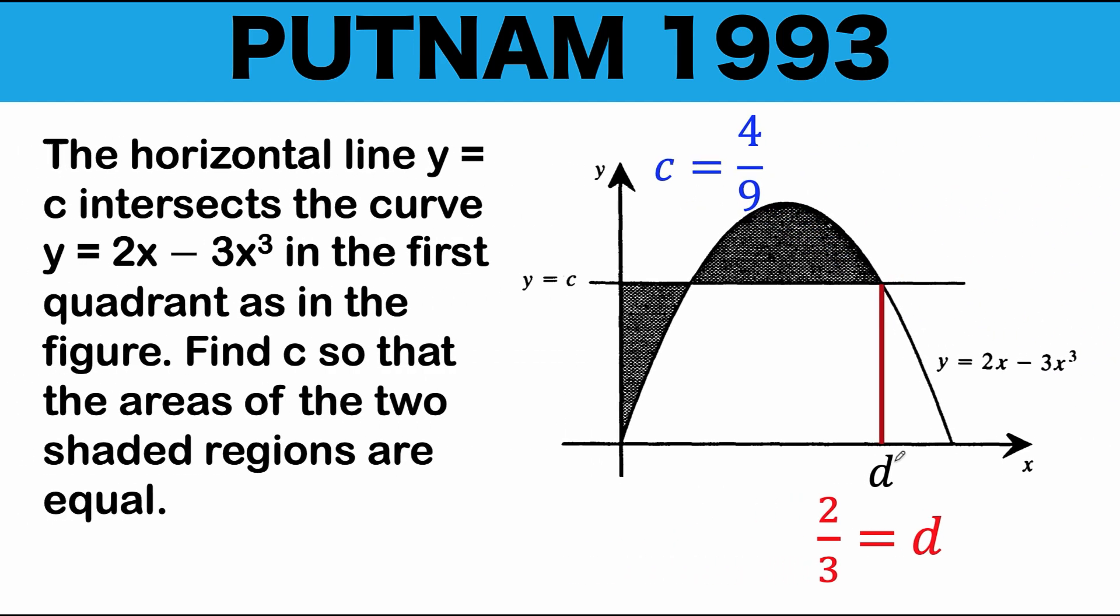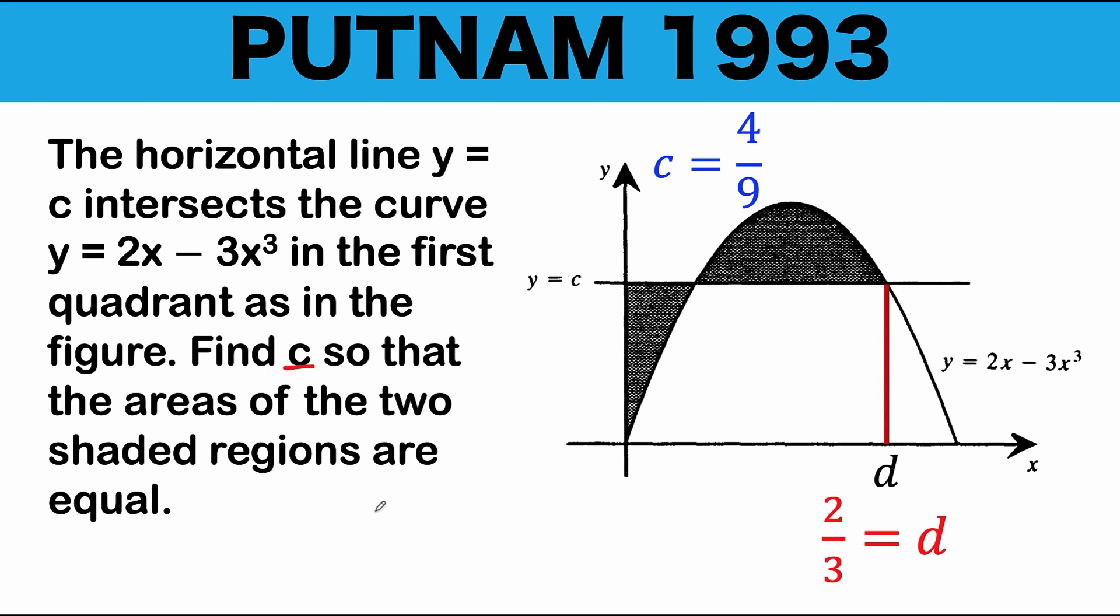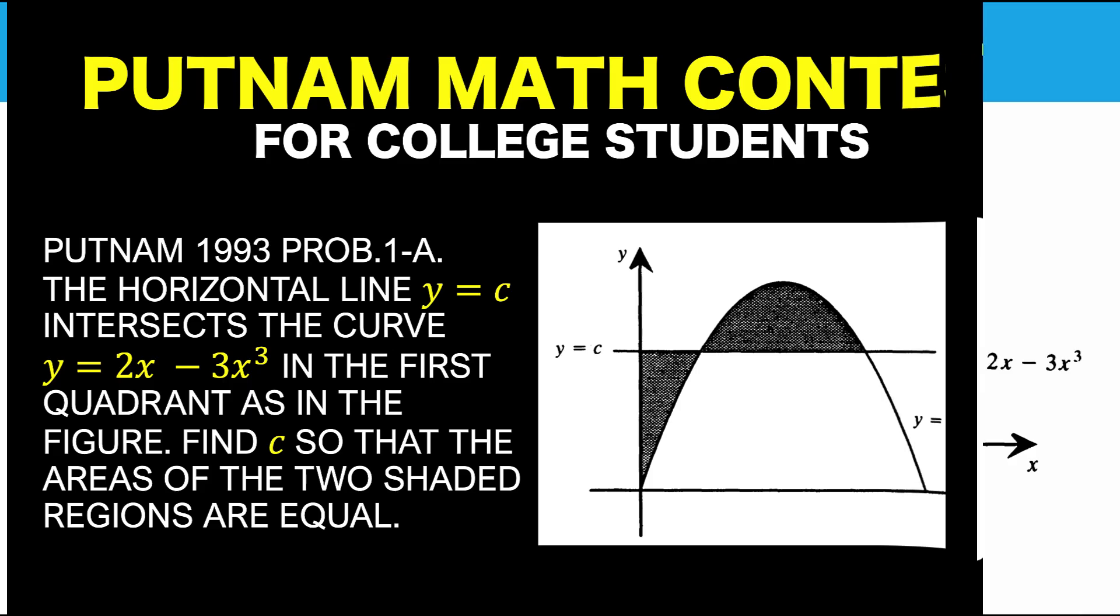And so, going back now to the main question, we would like to find the value of c so that the areas of the two shaded region are equal. We just found out that the equation of this horizontal line must be equal to y equals 4 over 9. And when that happens, this area at the left side of this point of intersection and the area from here up to x equals d are equal. And if you are curious what is the value of this point of intersection, although it's no longer necessary in this problem, we can solve again this equation y equals c and y equals 2x minus 3x cubed simultaneously to arrive at this equation. And solving for x, x is equal to negative 1 plus square root of 3 over 3 or approximately equal to 0.244017. That is the x value of this point of intersection. The y value is 4 over 9. So, for our final answer, c is equal to 4 over 9. And this problem is now solved.